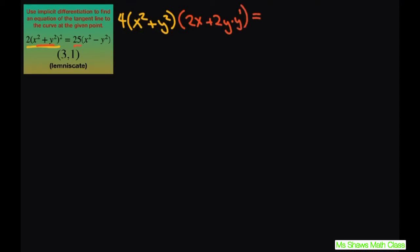Now this is just a constant, so you just have 25, and you do the same thing on this side: 2x but minus 2y times the derivative of y.